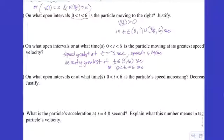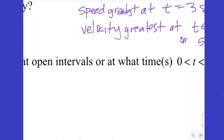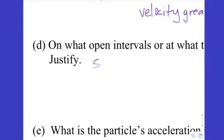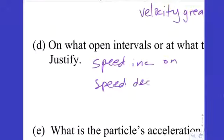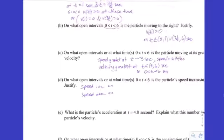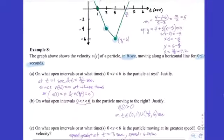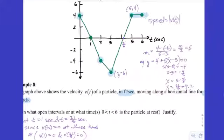On what open intervals is the speed increasing and decreasing? For speed increasing and decreasing, we have to look at two things: velocity and acceleration. Speed is increasing when velocity and acceleration are working together — that is, when the y-values (velocities) and slope values (accelerations) have the same sign.